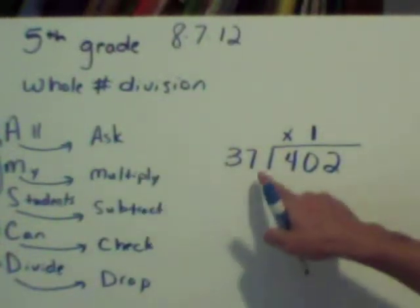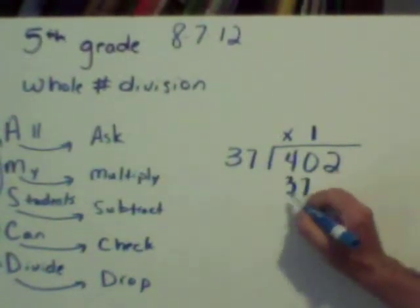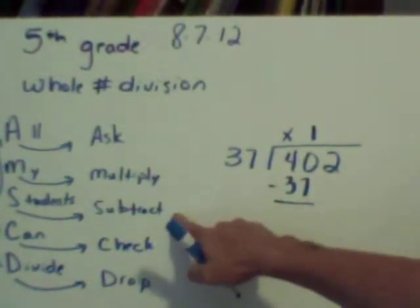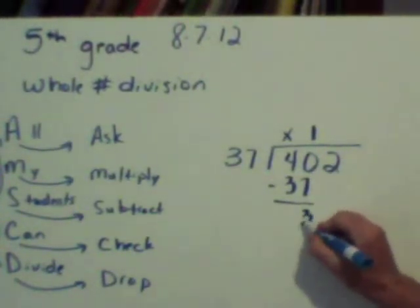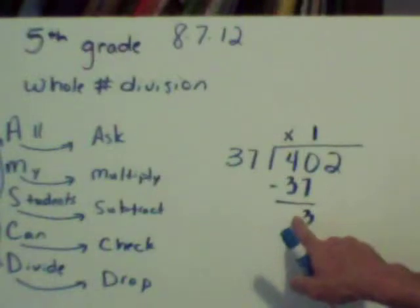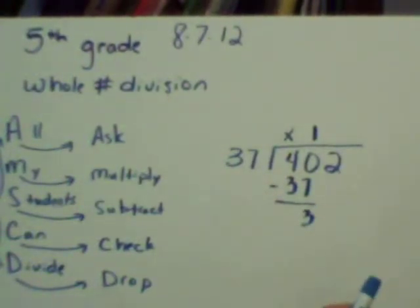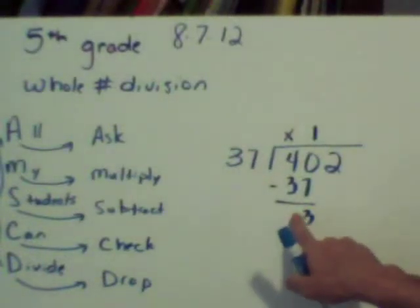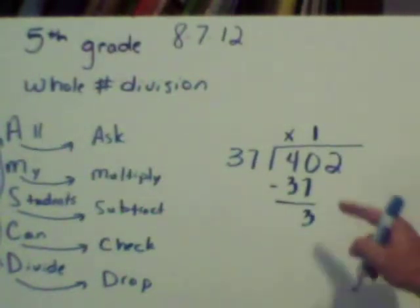I've done the asking, now I'm going to multiply. 37 times 1 is 37. All right, now I'm to the subtract part. 40 minus 37 is 3. This is the important part to check. I'm going to check and see, is 3 less than 37? If the answer is yes, if it is less, then I can go on to the next step. But if I get a number here that's bigger than what I'm trying to divide by, I've made a mistake here and I need to go back and redo. I can probably get one more group of the number that I'm dividing by.